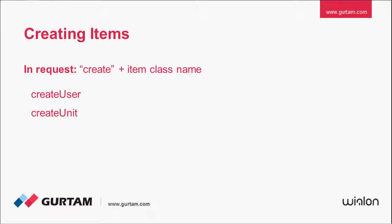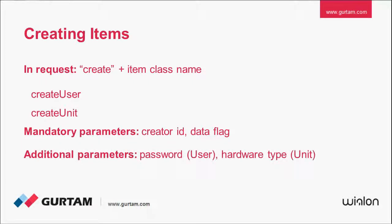Using these requests, you can create a new item of the corresponding class. All such requests have some mandatory parameters such as name, creator ID, and data flag for the response data, and additional parameters which are different for different item types. For example, for unit groups, resources, and routes, you need no additional parameters. For user, you need to specify password. For unit, the hardware type. For a retranslator, special configuration.